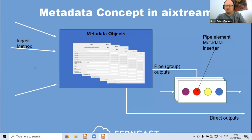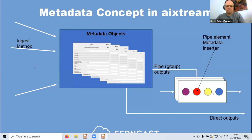We have several input methods — this is a continuous development. And we have outputs. For outputs there are two options: a direct output where we can forward metadata or output it on dedicated paths or protocols, or we can use it and embed it in our audio stream. This is the pipe group output, with the metadata inserter element in an audio pipe. Once you put a link to the metadata object, you can use it in all subsequent pipe elements.